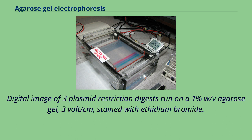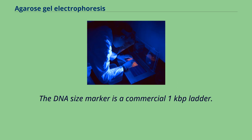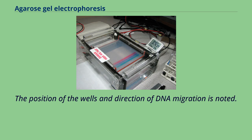Digital image of three plasmid restriction digests run on a one percent w/v agarose gel, three V/cm, stained with ethidium bromide. The DNA size marker is a commercial 1 kbp ladder. The position of the wells and direction of DNA migration is noted.